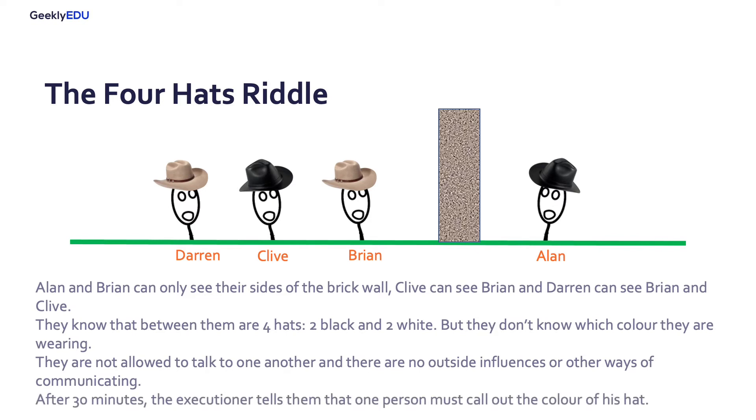After 30 minutes, the executioner tells them that one person must call out the color of his hat. If one of them gets it right, they're all free. The riddle is, who is certain about the color of their own hat?